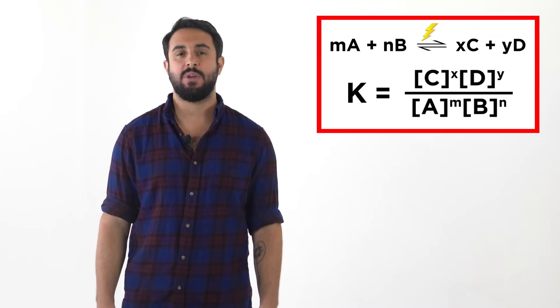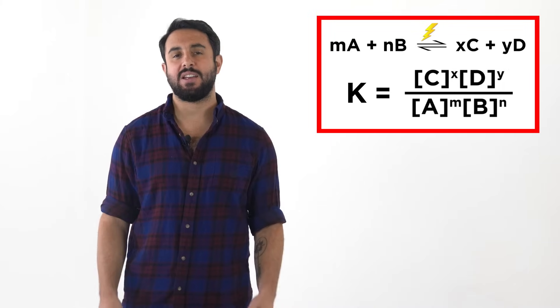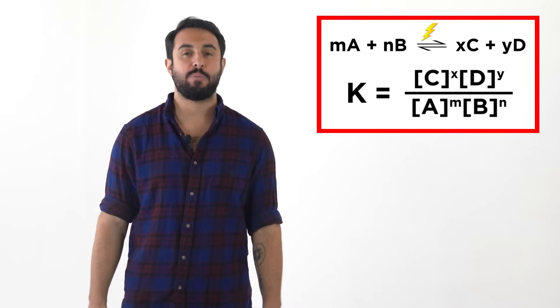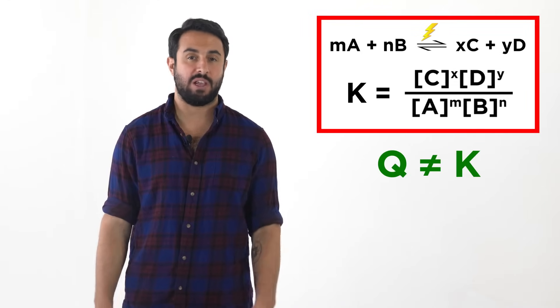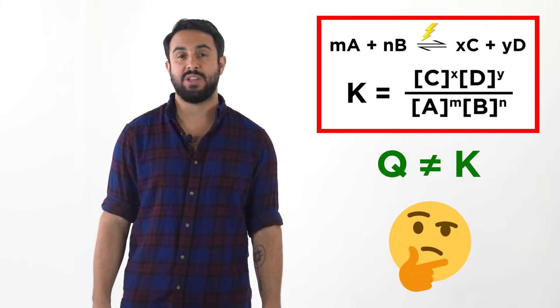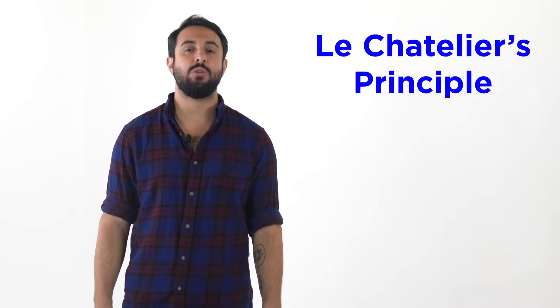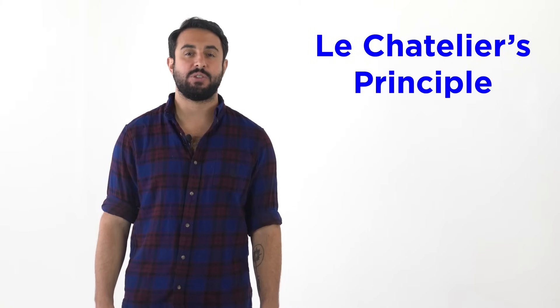Let us now consider a system that has reached equilibrium, but then experiences some kind of stress that causes the system to shift away from the perfect balance of equilibrium. This would mean that k and q would no longer be equal. We want to be able to predict how such a system will react, and we can make that prediction using Le Chatelier's principle. Let's see exactly what this principle says.